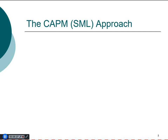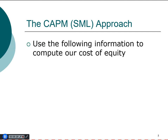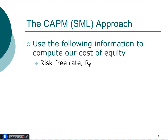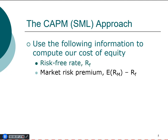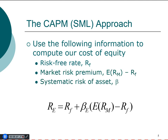The second approach to compute the cost of equity is to use the capital asset pricing model (CAPM) or security market line. The CAPM relies on the risk-free rate, the market risk premium, and the systematic risk (beta) of the stock. The required return on equity equals the risk-free rate plus beta times the market risk premium.